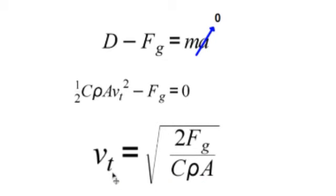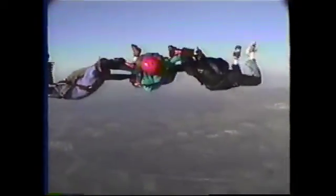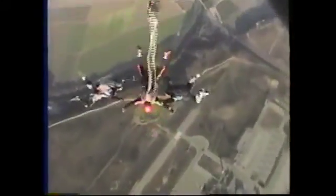Notice how the cameraman is able to adjust his position to be above or below Vivek. If everyone is supposedly falling at the same terminal velocity of 120 miles per hour, how is he able to do this? By bending or straightening his legs, he changes his cross-sectional area and changes his terminal velocity, just like Vivek does when he opens his parachute.